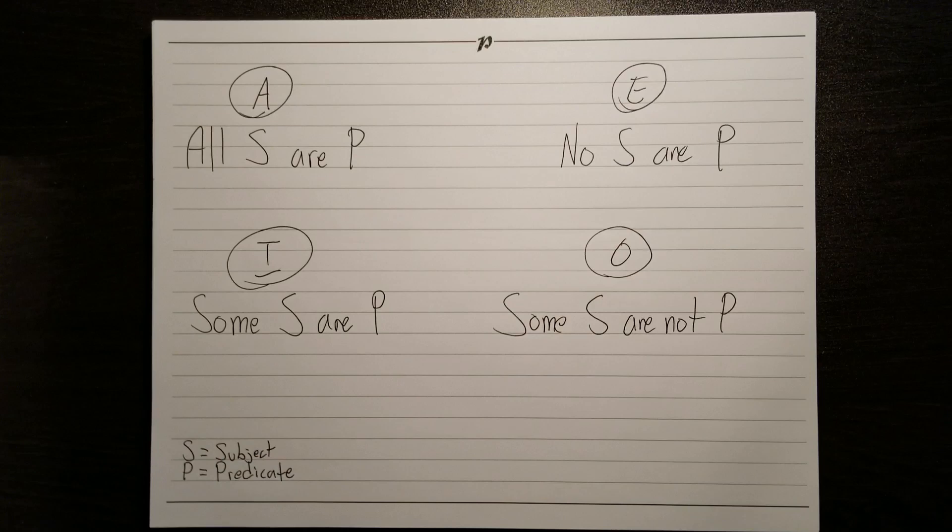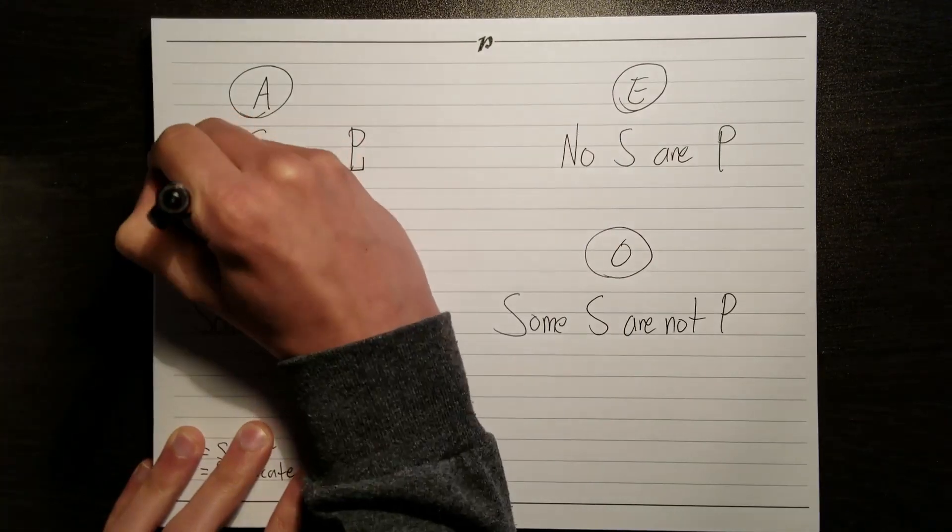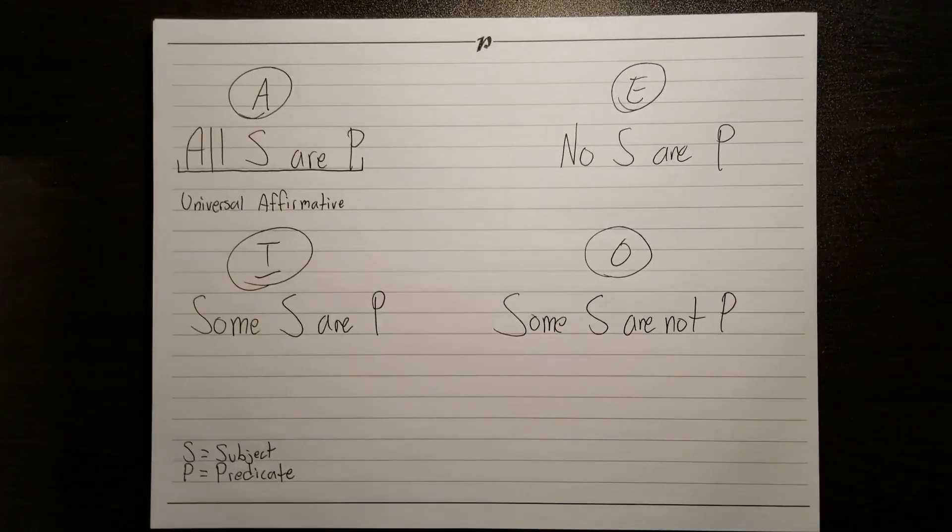As you can tell by the AEIO, this is pretty easy to memorize. A-type statements are known as universal affirmative statements, since their quantifiers are universal, and they're telling us that the subject does belong to the predicate.